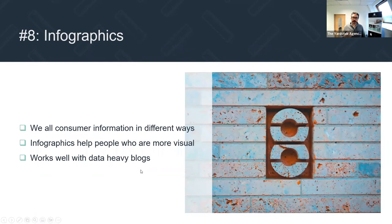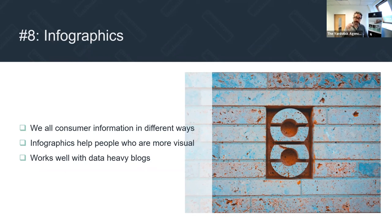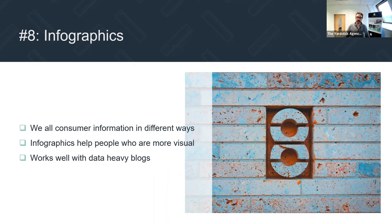Number eight: infographics. Not everybody wants to read blogs, and we all consume information in different ways. Turning blogs into infographics — whether on your website or used on social — will capture the eye. Infographics were incredibly popular a few years ago, and you see fewer of them now, so you will stand out more by creating them. They work best where you have data-heavy blogs, because data works really well in infographics. If you've got data-heavy content, consider turning it into an infographic.